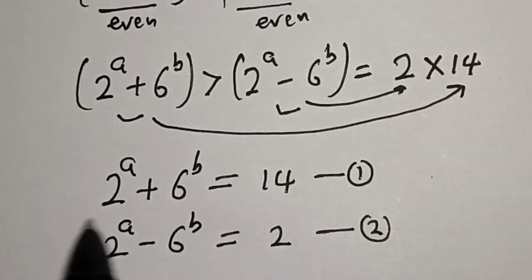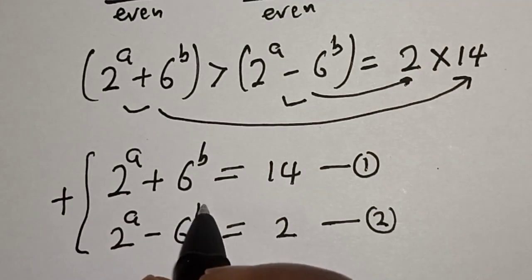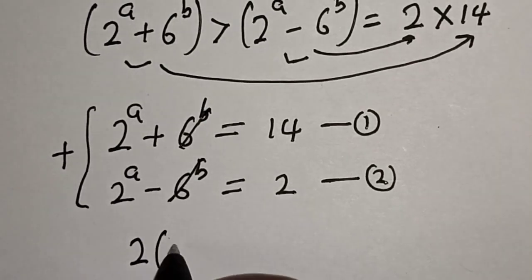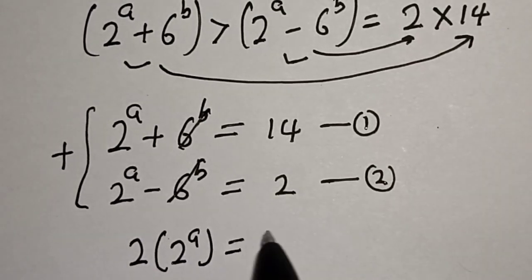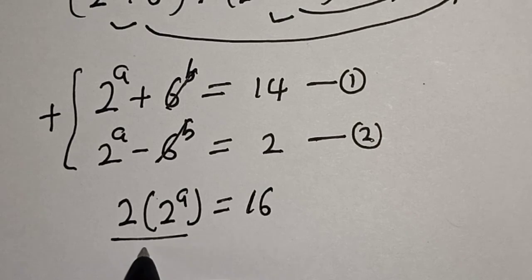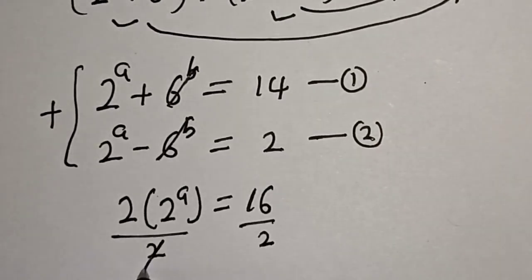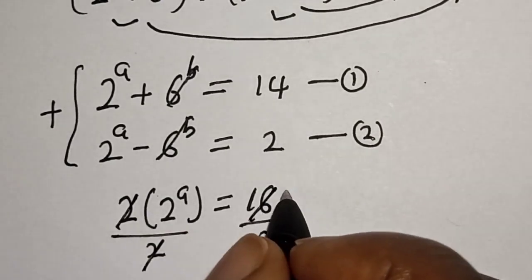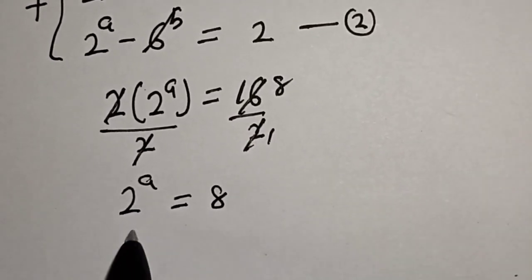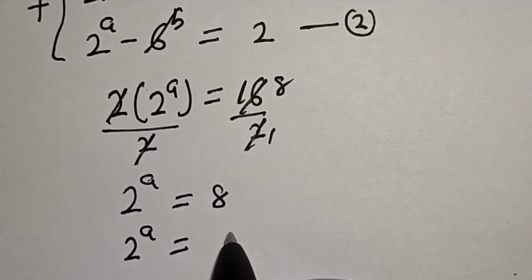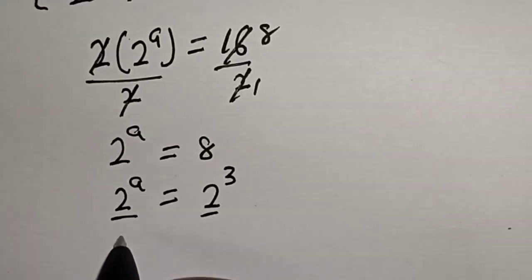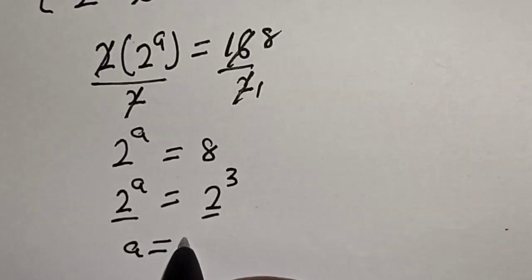Adding equation 1 and equation 2 together, the 6 to the power of b terms cancel. We get 2 times 2 to the power of a equals 16. Dividing both sides by 2, we get 2 to the power of a equals 8, which is 2 to the power of 3. Since they have the same base, therefore a equals 3.